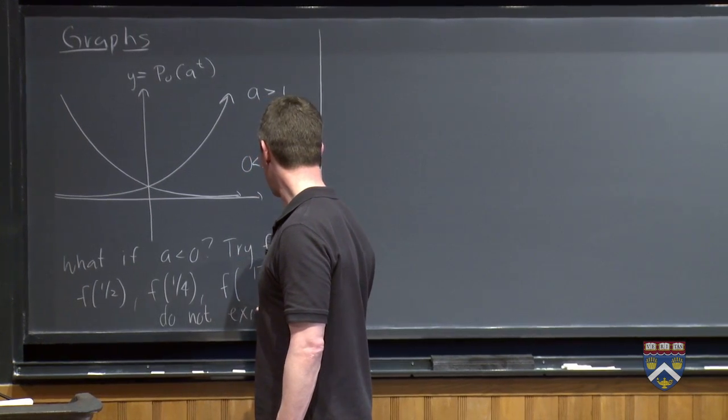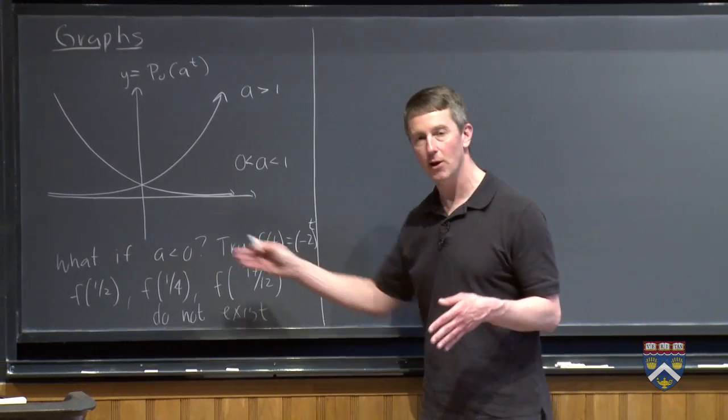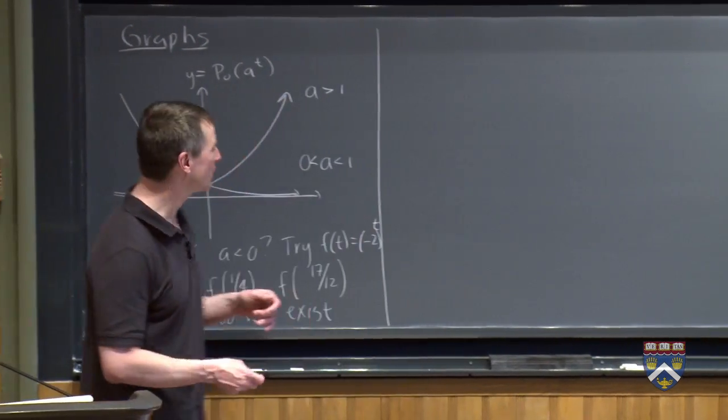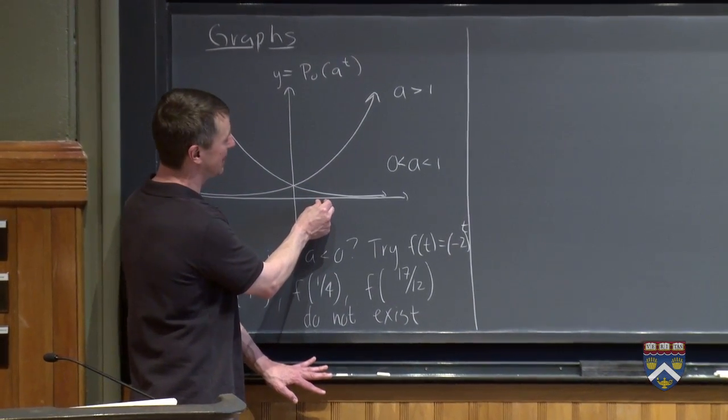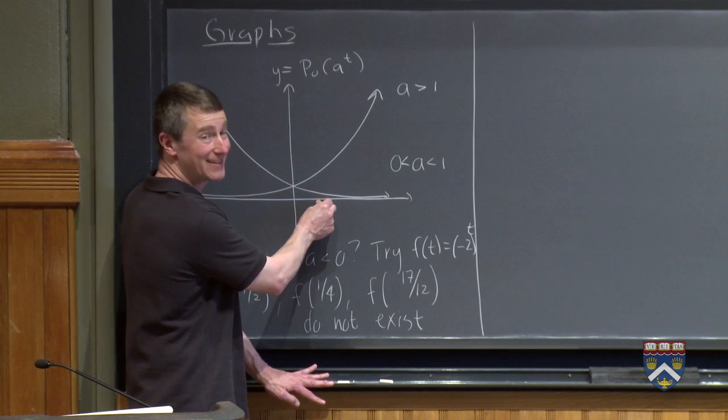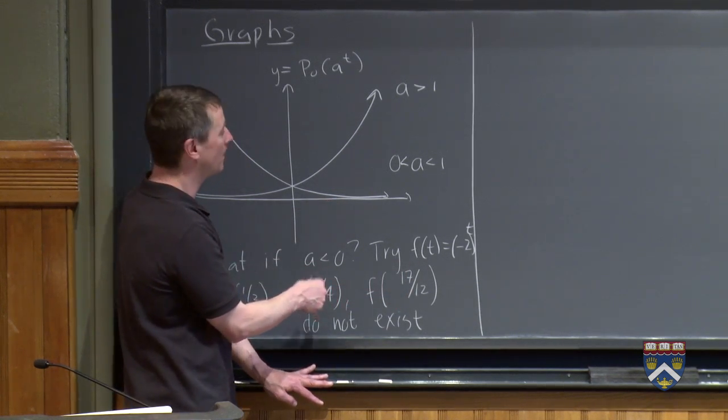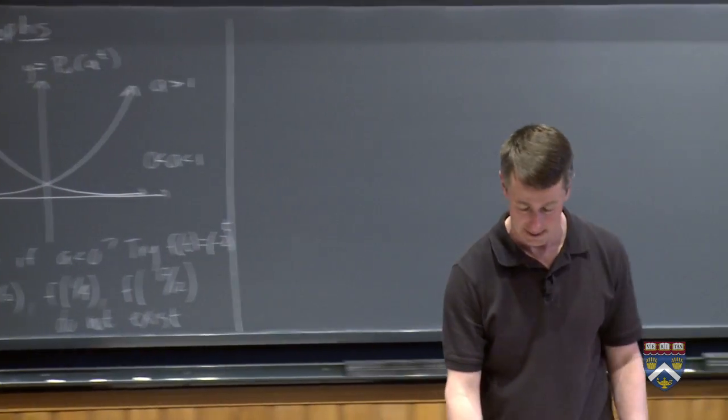So a graph, if you tried to draw the graph of, say, negative 2 to the t, there are infinitely many holes in the graph where the graph doesn't exist. In fact, even if you pick the tiniest little bit of the t-axis, no matter how tiny, as long as it's a non-zero length, just in that little piece of the t-axis, there's infinitely many numbers that take this form where the graph fails to exist. So very, very messy. We're not going to worry about that.